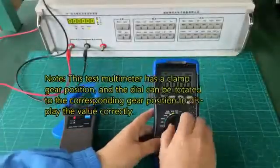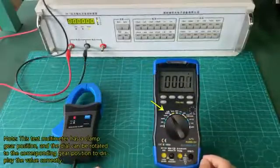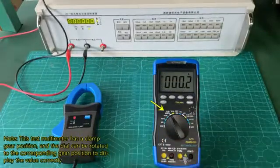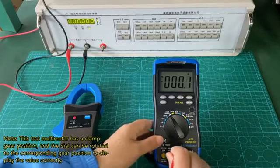Note: This test multimeter has a clamp gear position, and the dial can be rotated to the corresponding gear position to display the value correctly.